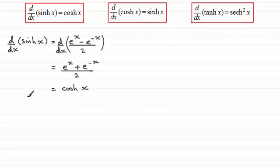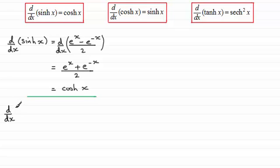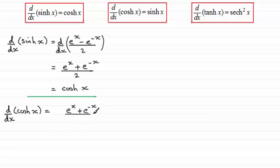When it comes to differentiating cosh(x) to show that it's sinh(x), we do it by a similar method. You might like to pause the video and have a go at differentiating that. Welcome back. The definition of cosh(x) is e to the power x plus e to the power minus x, all divided by 2.